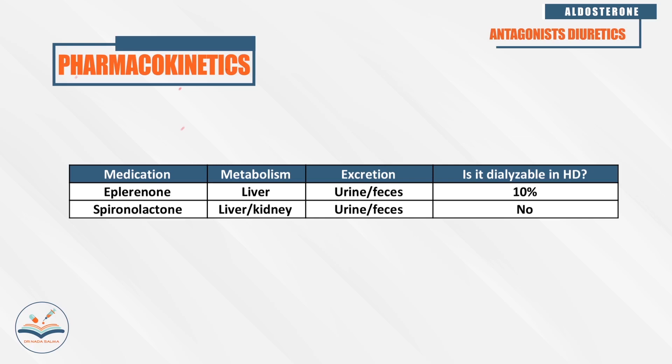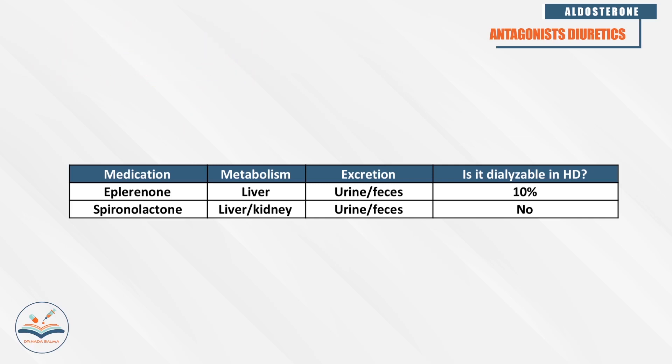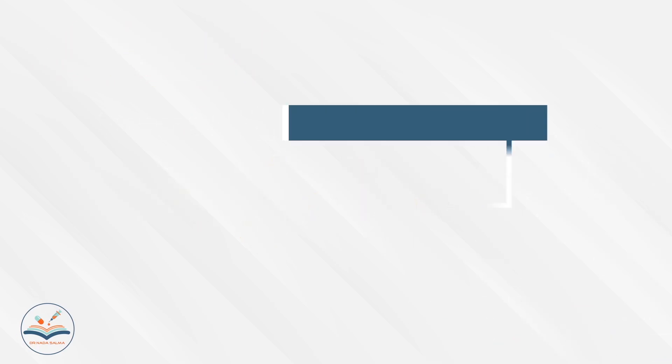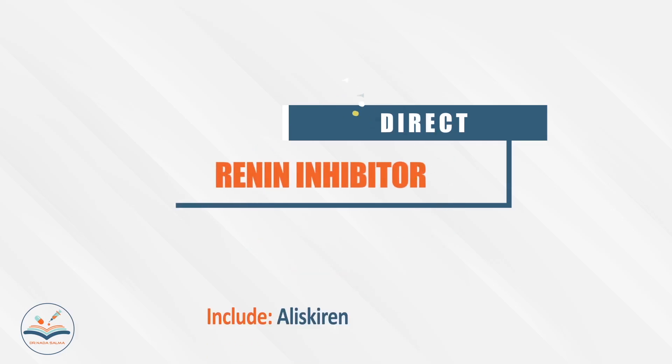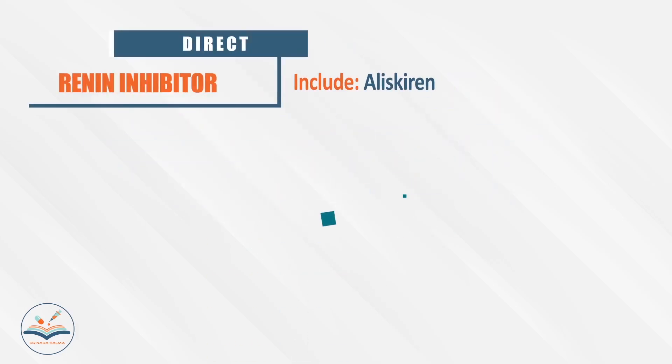Spironolactone is category C during pregnancy and eplerenone is category B. They are metabolized in the liver and kidneys and excreted in urine and feces. They are not dialyzable.